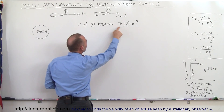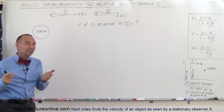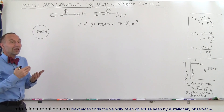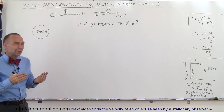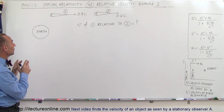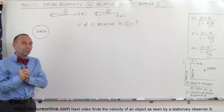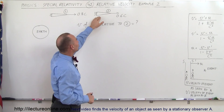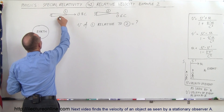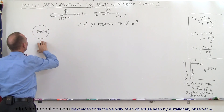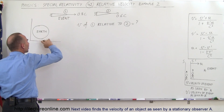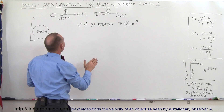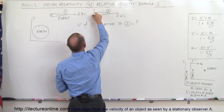What is the velocity of Spaceship 1 relative to Spaceship 2? We have three velocities: the velocity of the event as seen by the stationary observer, the velocity of the event as seen by the moving observer, and the velocity of the moving observer relative to the stationary observer. We need to assign a stationary reference frame, a moving reference frame, and identify the event. Since we're trying to figure out the velocity of Spaceship 1 relative to Spaceship 2, let's call Spaceship 1 the event. Let's call the Earth the stationary reference frame — reference frame S.